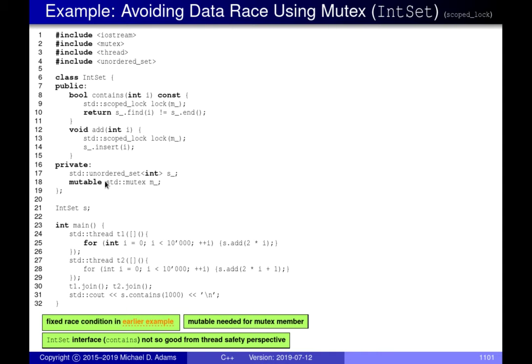Another code example is an integer set class providing a basic interface: you can query whether a particular integer value is in the set, and you can add an element. Two threads loop adding elements into the same container S. As we observed in the last lecture, this causes bad things because the data structure is accessed by two threads at the same time — at best they corrupt the overall data structure, at worst they cause a data race. We can introduce mutexes to prevent this undefined behavior.